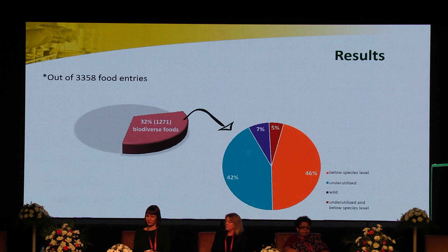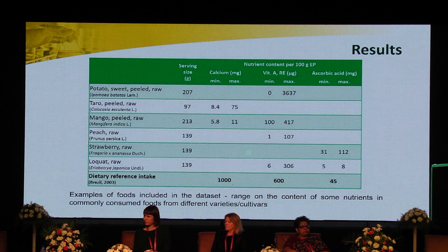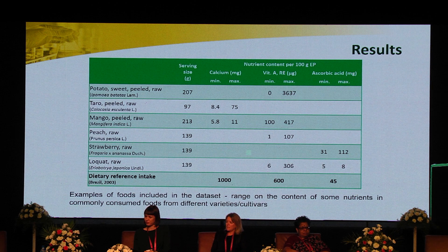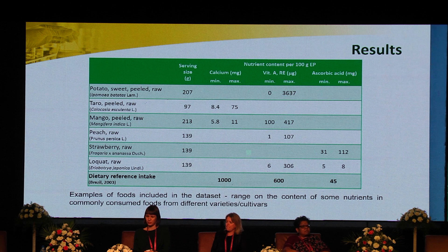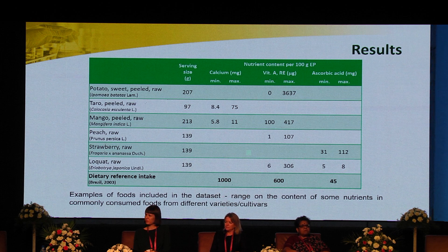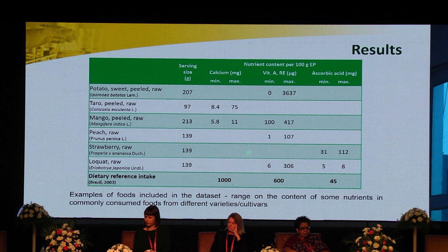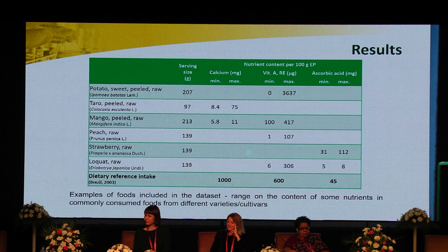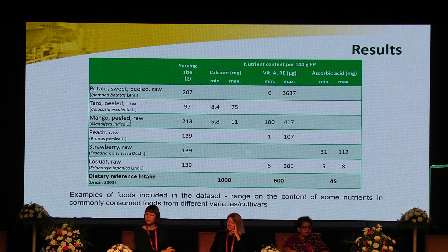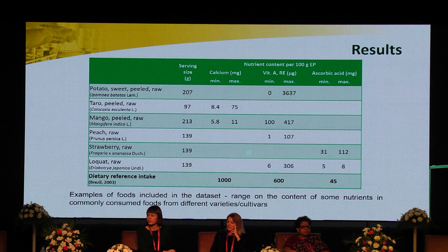I will give some examples of plant foods in these two categories. Here we have some examples of foods included in the dataset to show the range of nutrient content in commonly consumed foods in Brazil from different varieties or cultivars. We have data for calcium, vitamin A, and ascorbic acid, showing the minimum and maximum values found in our dataset.